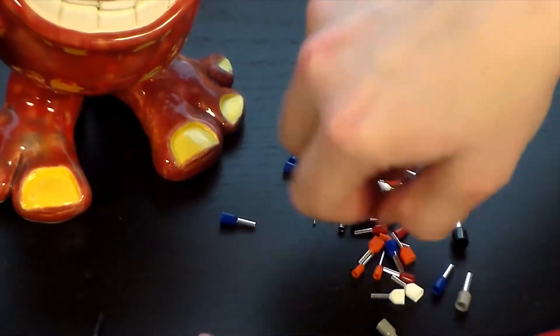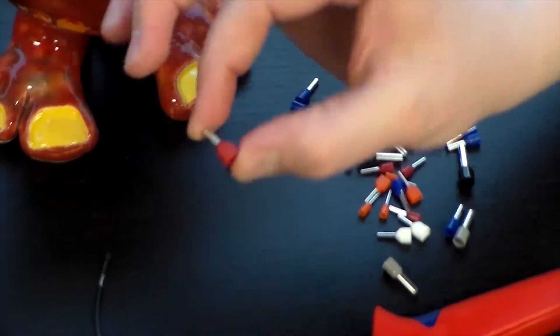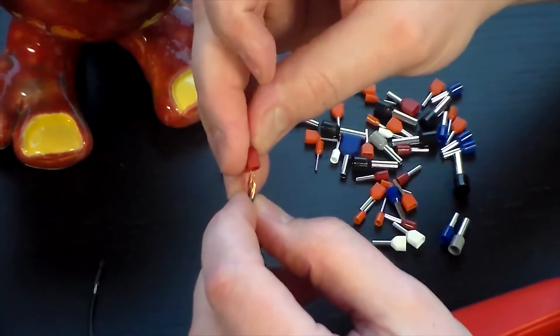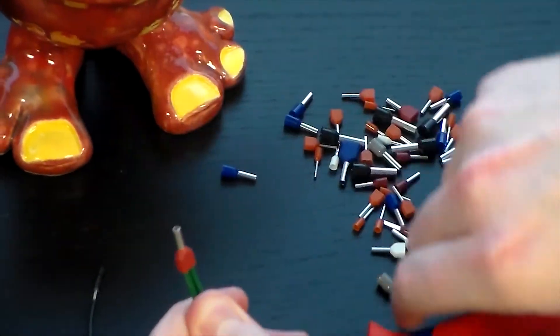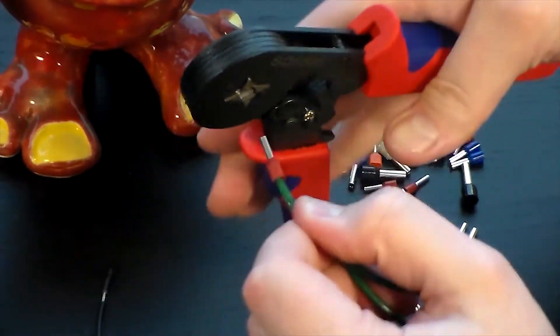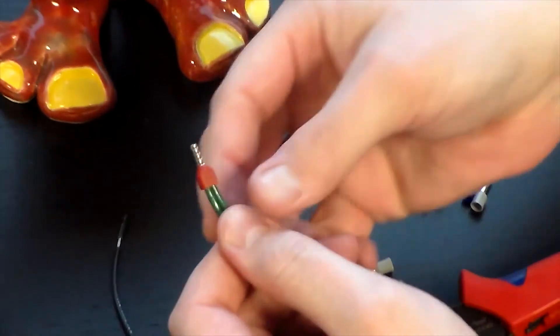We're going to grab part number TW15008, which you'll see right here. It's a red ferrule. Slip that over. All right, they funnel nicely inside. Grab your ferrule crimper. Give it a squeeze, nice and easy. There it is, crimped perfectly.